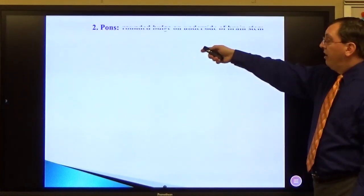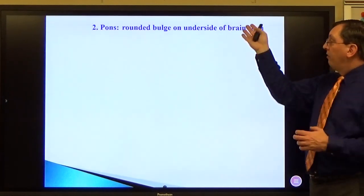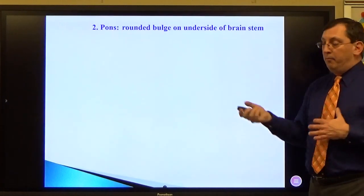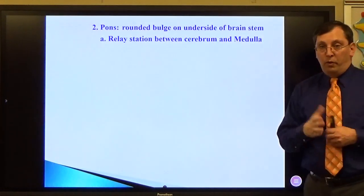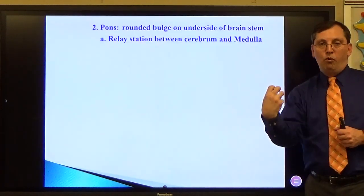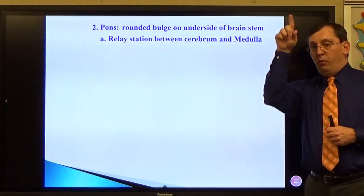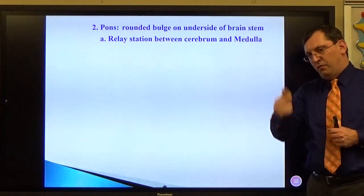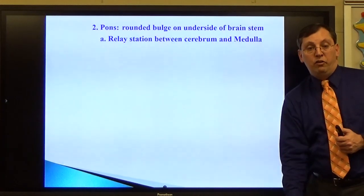The pons is a rounded bulge that's located on the underside of the brain stem. It's also a relay station. In this case, the relay is between the cerebrum and the medulla, which is the bottom portion of my brain stem. So instead of going to my cerebellum, it's helping to transfer information down and then off, eventually into the spinal cord.